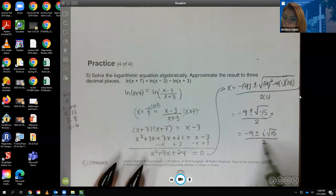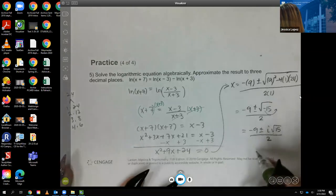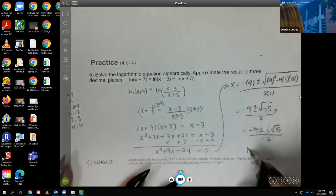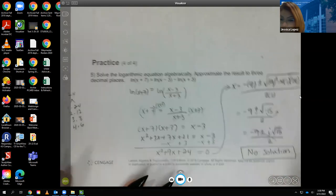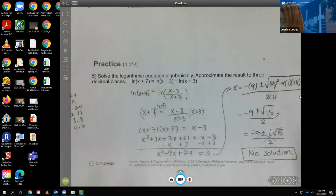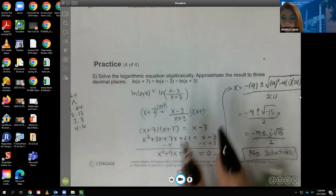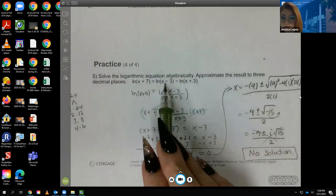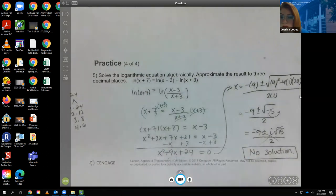Now, since we're getting imaginary answers, they're not going to want me to type imaginary answers in the computer. So in the computer, this is just going to tell me the answer is no solution. If we hadn't gotten an imaginary answer, then we would have been able to find our two solutions. And then you just have to make sure that none of those solutions make any of these arguments zero or negative.